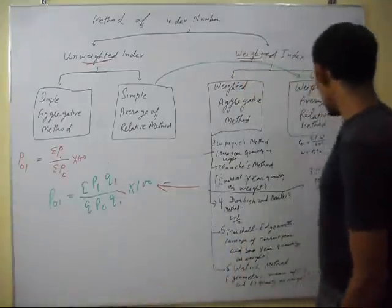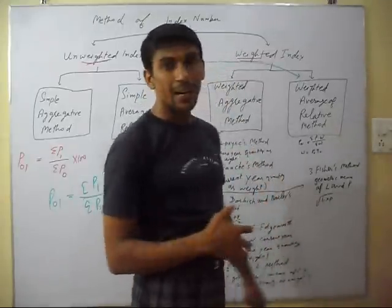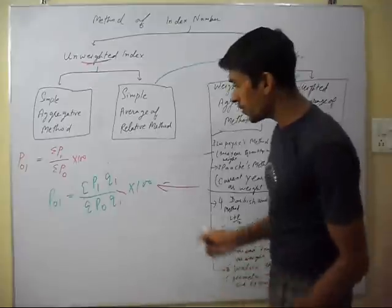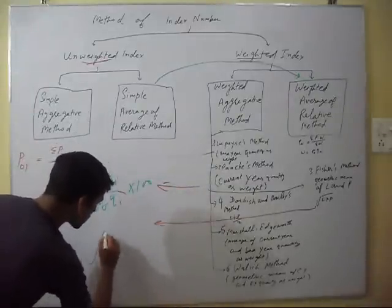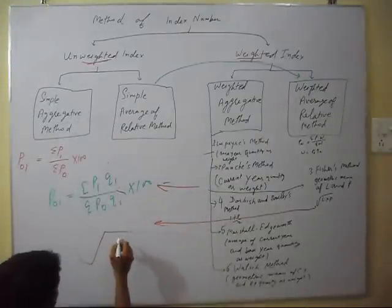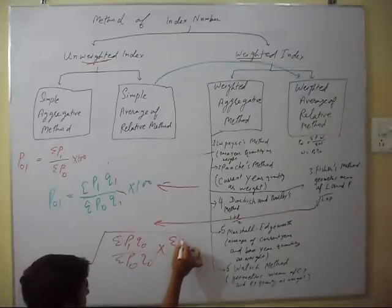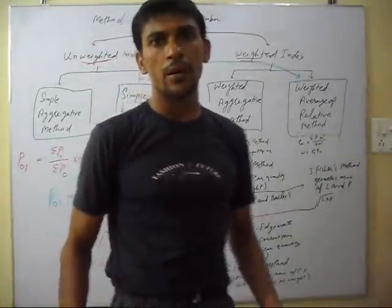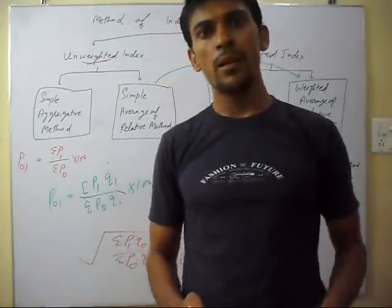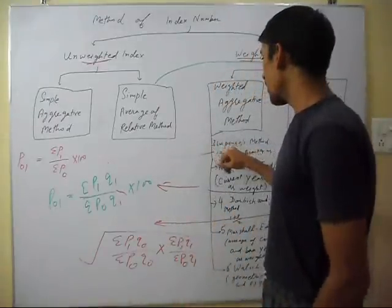The third is the Fisher method. The Fisher method is the geometric mean of Laspeyres and Paasche. The formula is: square root of (sigma P1 Q0 / sigma P0 Q0) multiplied by (sigma P1 Q1 / sigma P0 Q1). Fisher is considered the ideal index number because it is the geometric mean of Laspeyres and Paasche.